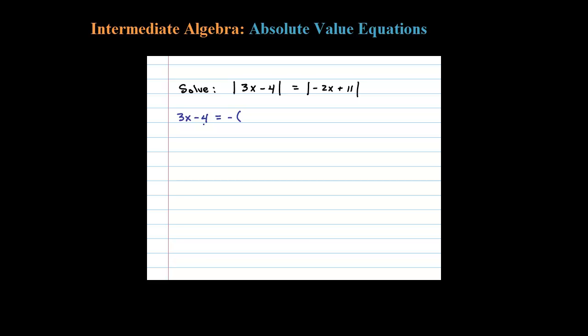So in this case, 3x minus 4 would equal negative (negative 2x plus 11), or 3x minus 4 could equal plus the argument there, 2x plus 11.